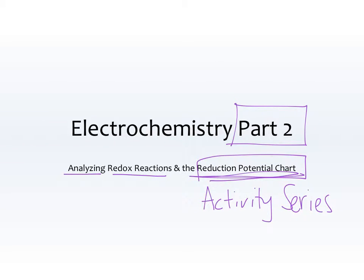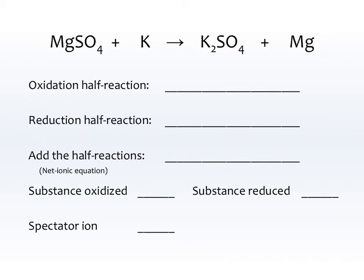Let's go ahead and get started. We have a reaction. I know that this is a redox reaction because the charges change from left to right, and I know the charges change because I know how to assign oxidation numbers like we did in our last video. So first, I'm going to assign oxidation numbers. I see that there's a potassium and he's all by himself.